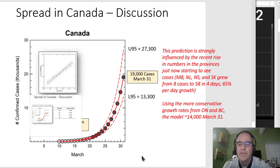The prediction is strongly influenced by the recent rise in numbers in some of the provinces just now starting to show spread. So Manitoba, New Brunswick, Nova Scotia and Saskatchewan grew from eight cases to 58 cases in four days. That's a 65% per day growth rate that's an astonishing rate. So it's possible that that's just because cases were discovered and testing started to ramp up and maybe the spread isn't quite that fast, it's just that we're discovering that those cases were there.